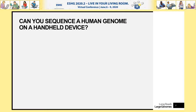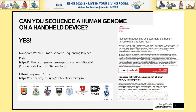With any new sequencing technology, there's always the question: can you sequence a human genome on it? In this case, the MinION is a portable, handheld device, and the answer was yes. This was published a couple of years ago — the first sequencing and assembly of a human genome with nanopore data. All of these data are freely available on GitHub, and it also contains RNA and cDNA data from the NA12878 reference sample.